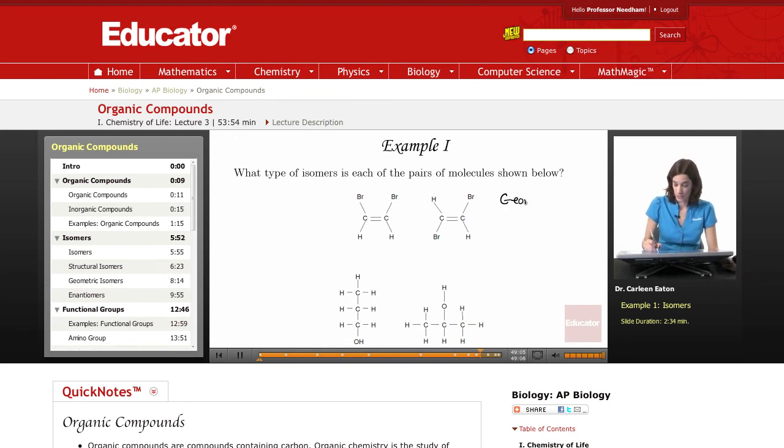In fact, they are geometric isomers. And one clue to this is the double bond. This inflexible double bond holds these molecules in a certain conformation where the two bromine molecules are on one side in this isomer.